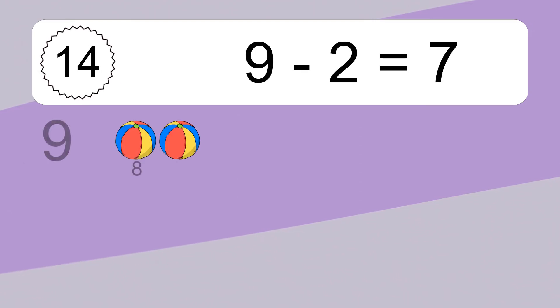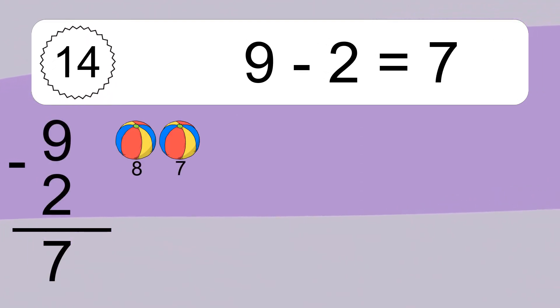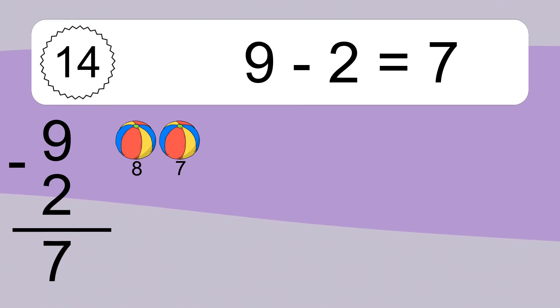9 minus 2 equals what? 9 minus 2 equals 7. Let's count it. 8, 7.